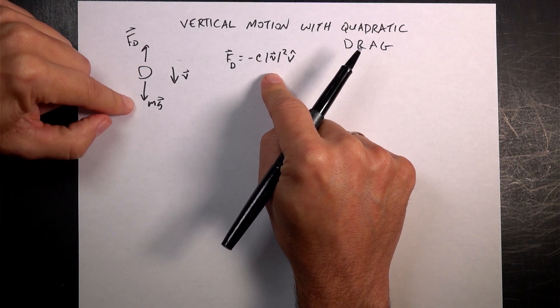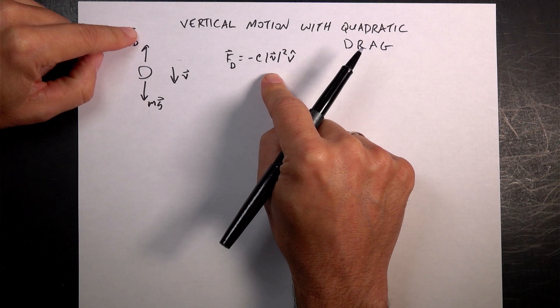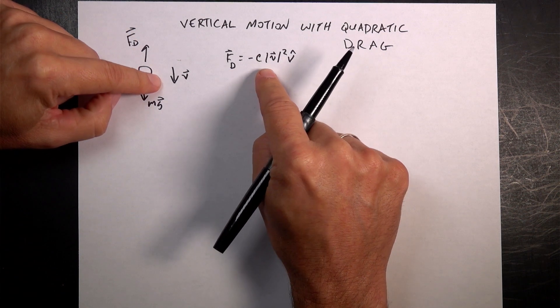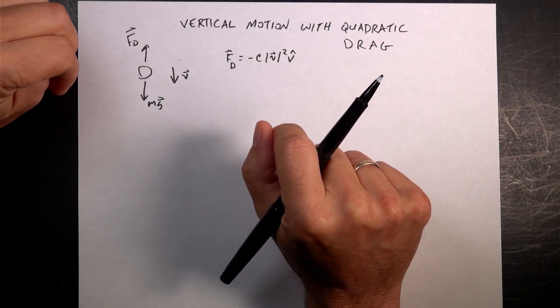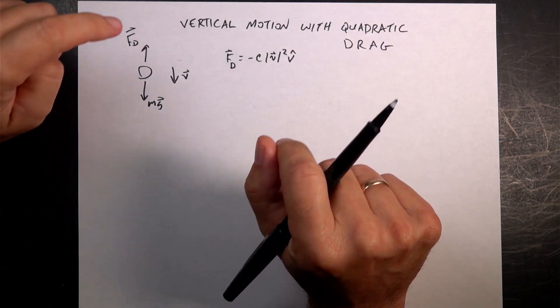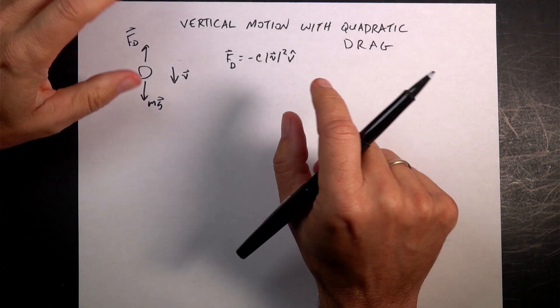So in this case, here's a falling object. The gravitational force pulling down, drag force up, moving down. The drag force is some coefficient C. Depends on the type of air, the size, the shape, stuff like that.